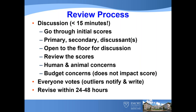Then everybody votes, typically based on the primary reviewer scores. For example, if primary reviewer one gave a four, reviewer two gave a two, and the discussant gave a three, most people take the average and give a three. If you vote outside that range, you have to raise your hand and say so. The reviewers then have the opportunity to revise their written reviews within 24 to 48 hours based on the discussion.